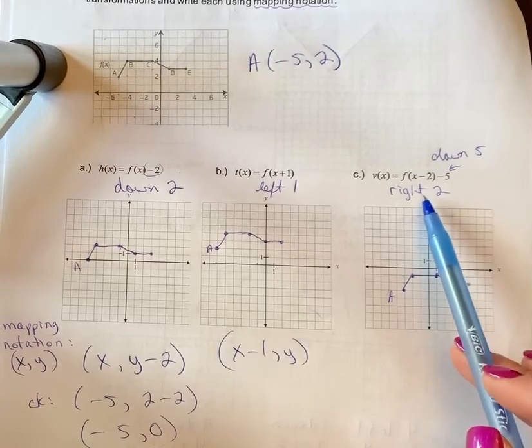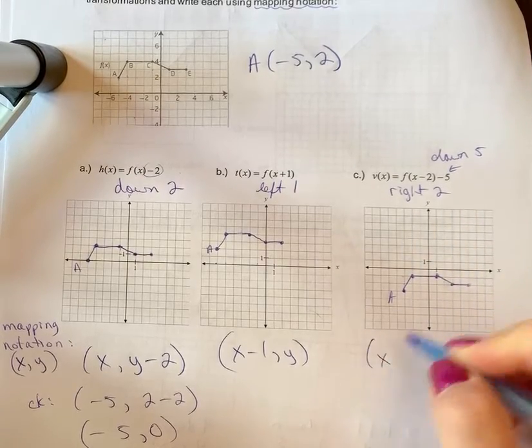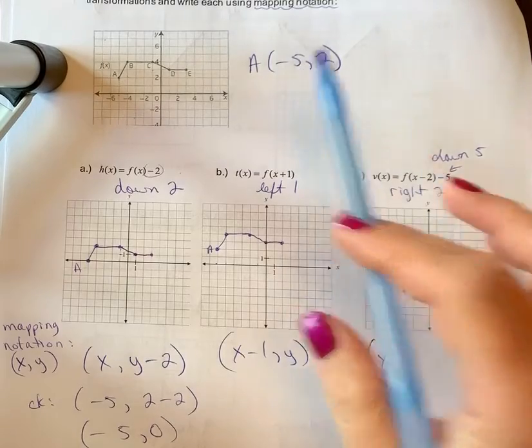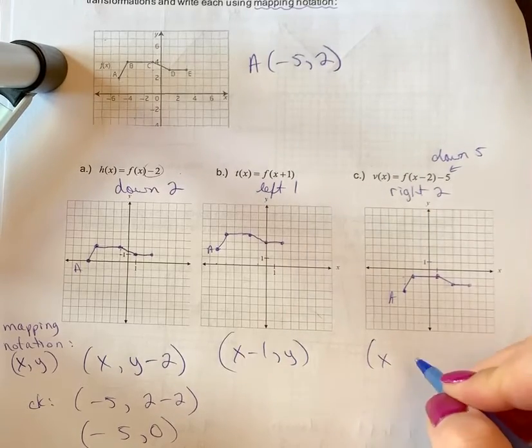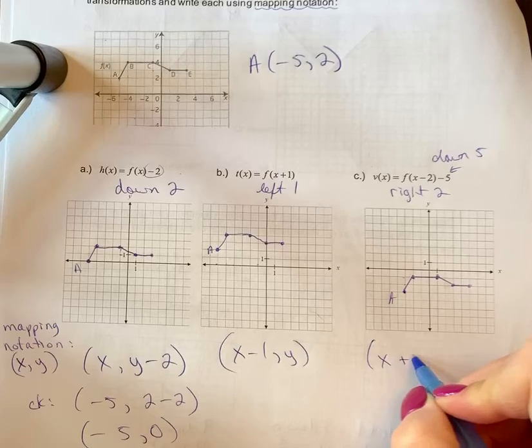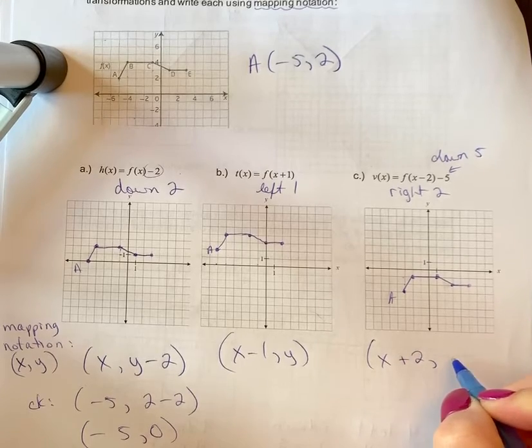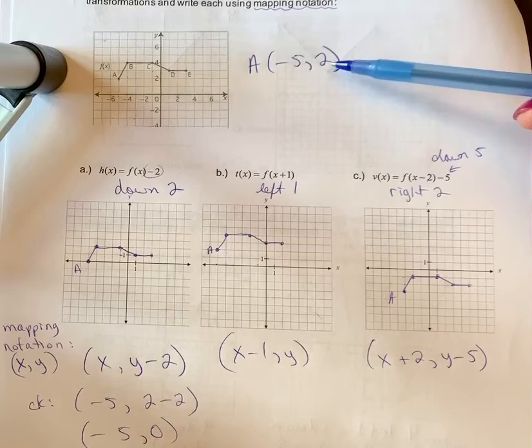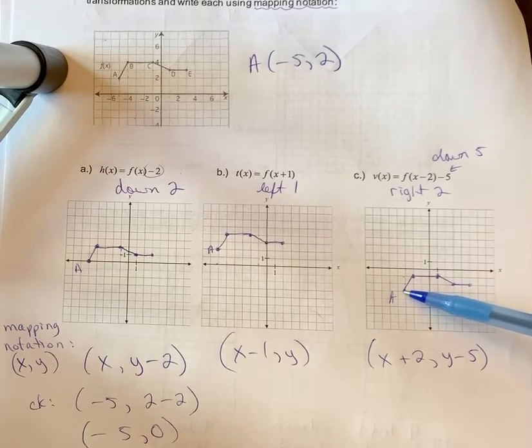If we go to C, right 2 down 5, right 2 means we added 2 to the negative 5. Negative 5 plus 2 gave us the negative 3 coordinate. You add 2 and then down 5 means you subtract 5. So 2 minus 5 gave us the y coordinate of negative 3.